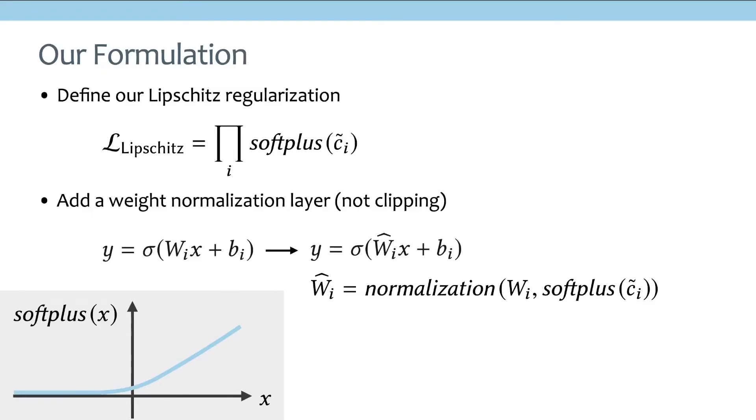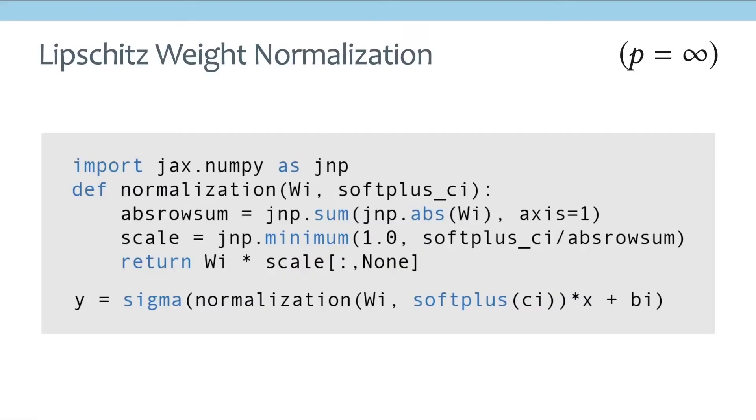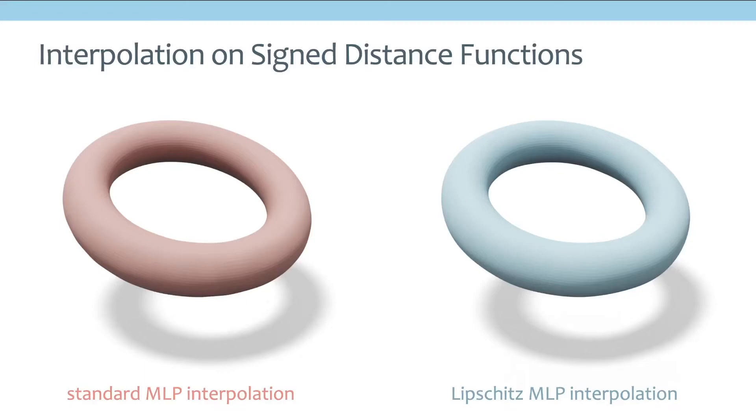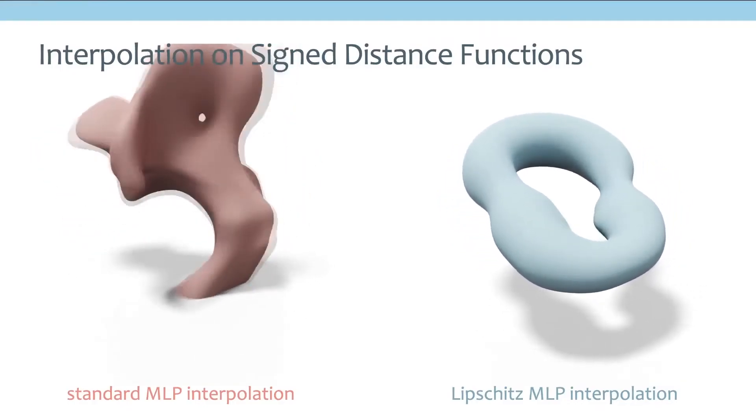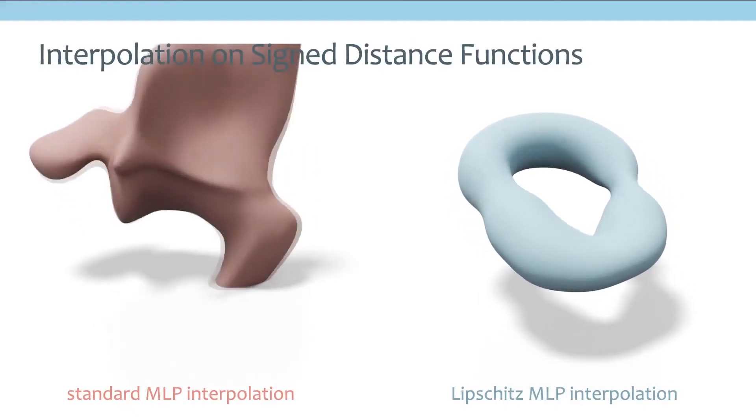And you may be curious how difficult it is to implement our method. The result is actually very simple. And this weight normalization only corresponds to a few lines of JAX code. And once you have that, you have all the ingredients you need to turn a standard non-smooth MLP interpolation into a very smooth one with Lipschitz MLP.